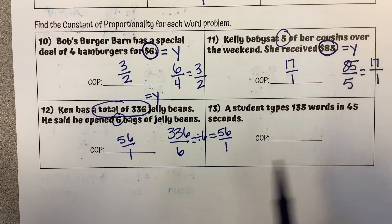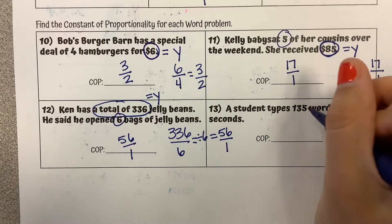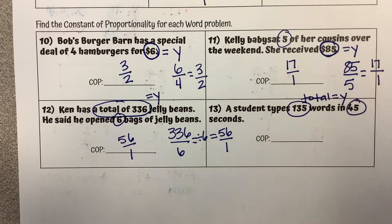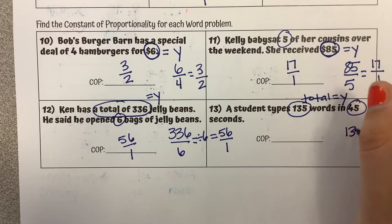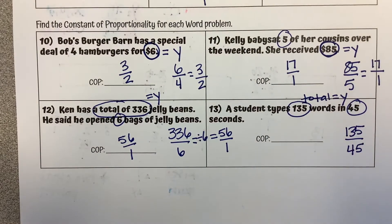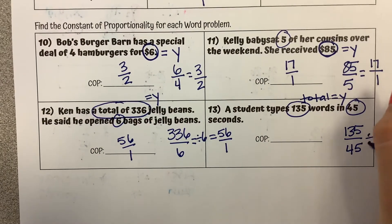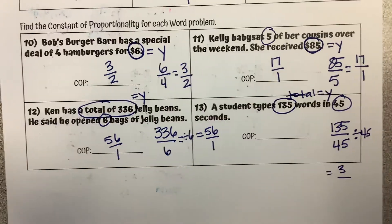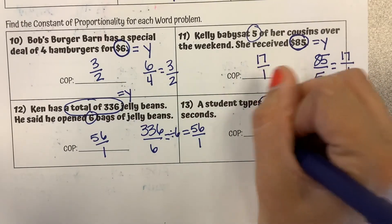And then last problem, a student types 135 words in 45 seconds. So the 135 is a total amount which generally is our y value and 45 seconds is going to be our x. So we're doing 135 over 45 and let's see if we can simplify. I think these might both simplify by 45 so I'm going to try that. If not we could divide by 5. So 135 divided by 45 does divide, that gives me 3 and 45 divided by 45 is 1. So our constant of proportionality is 3 over 1.